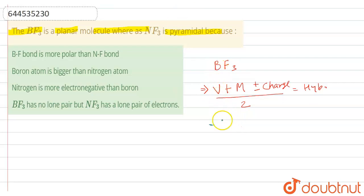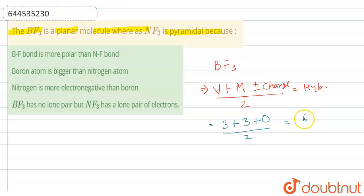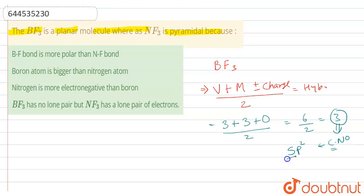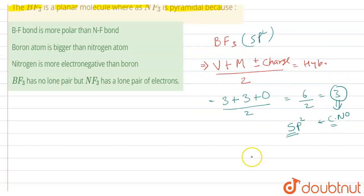For BF3, boron has valence electrons equal to 3, plus monovalent atoms equal to 3, plus charge is 0, divided by 2. That gives 6 divided by 2, which equals 3. Coordination number is 3, so SP2 hybridization takes place for this compound.